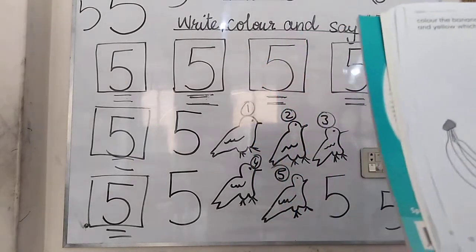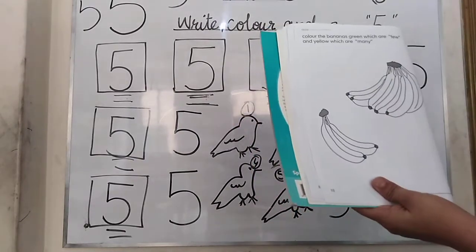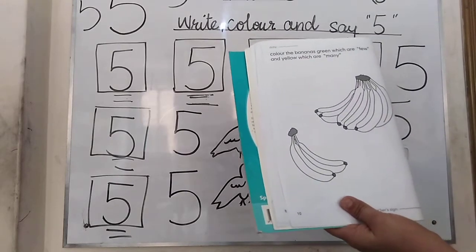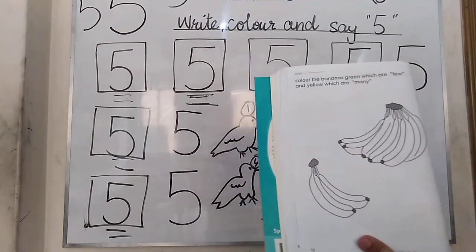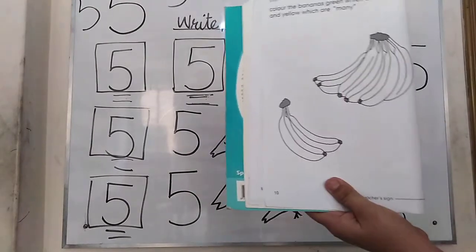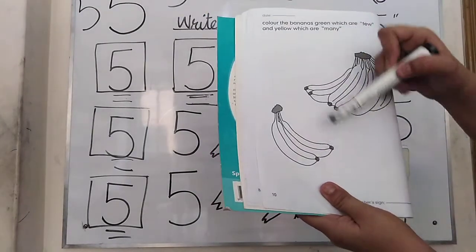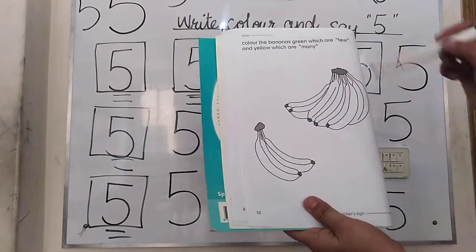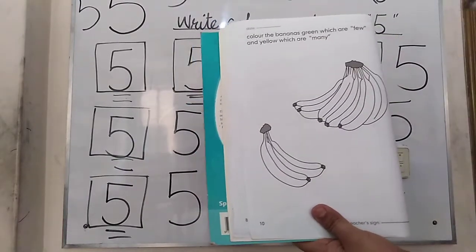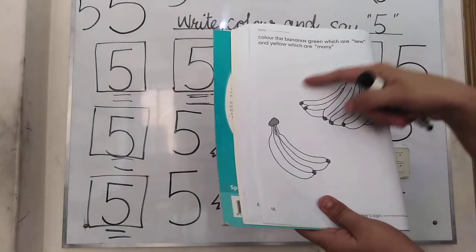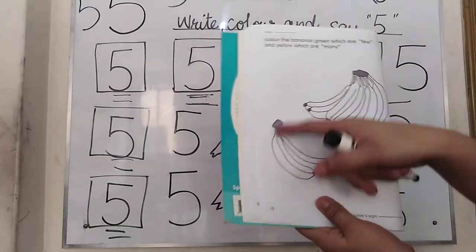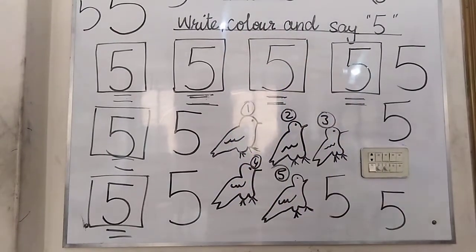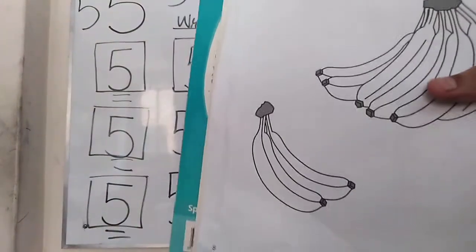We will write number 5. Now, few means a small number and many means a larger number. Color the few bananas green, and color the many bananas yellow. Color the more than a few bananas yellow and the two bananas green.